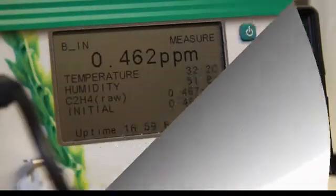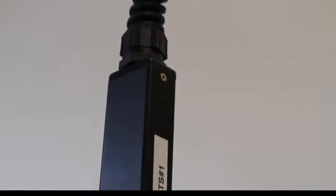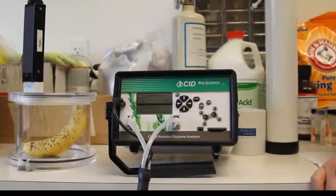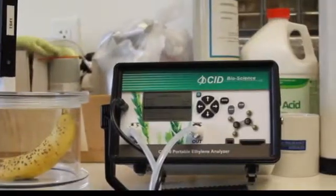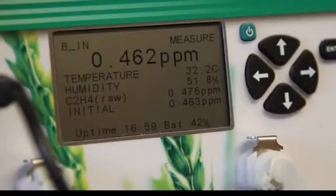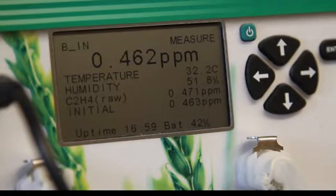Now we are once again in the measurement phase. As we set before, the CI900 will go through 4 minutes of measurement, and then switch over to a cleaning phase, and measure once again. After the cleaning phase, we are left with our real-time measurement of the ethylene gas composition of our banana sample.